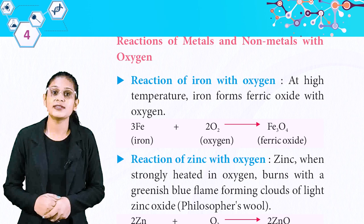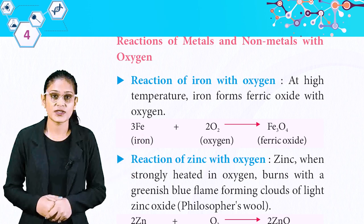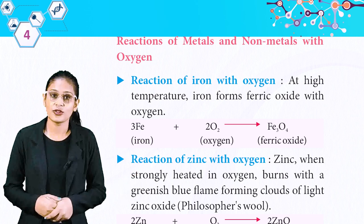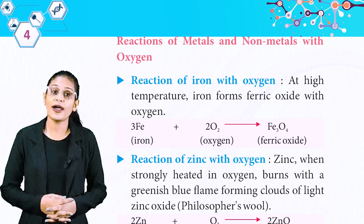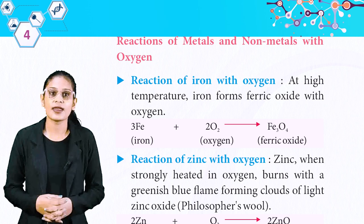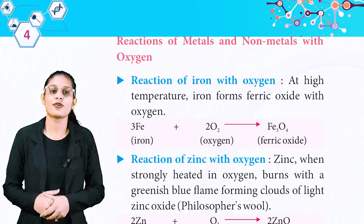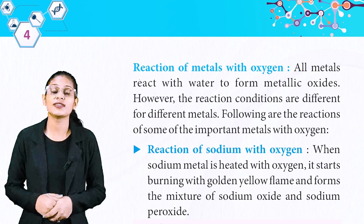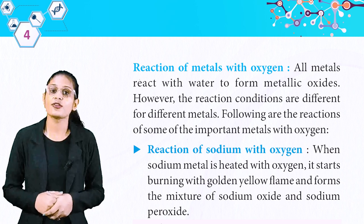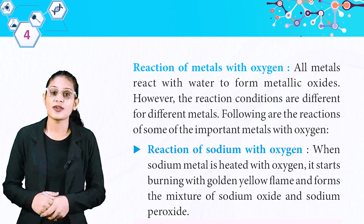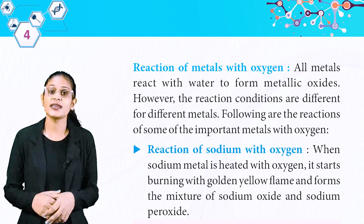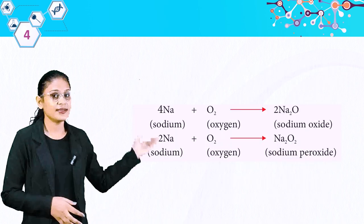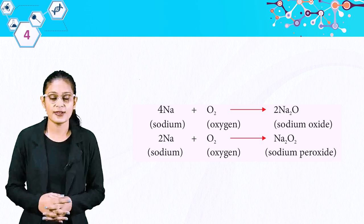Now, reactions of metals and non-metals with oxygen. Reaction of iron with oxygen: at high temperature, iron forms ferric oxide with oxygen. Reaction of zinc with oxygen: zinc, when strongly heated in oxygen, burns with a greenish-blue flame forming clouds of zinc oxide. Reaction of sodium with oxygen: when sodium metal is heated with oxygen, it starts burning with a golden yellow flame and forms a mixture of sodium oxide and sodium peroxide.